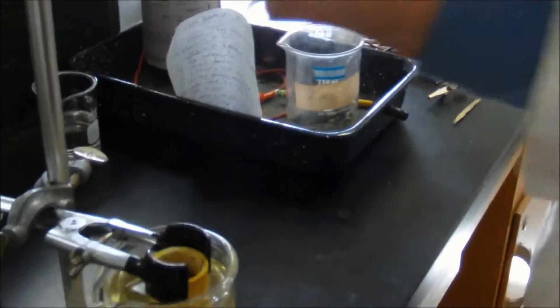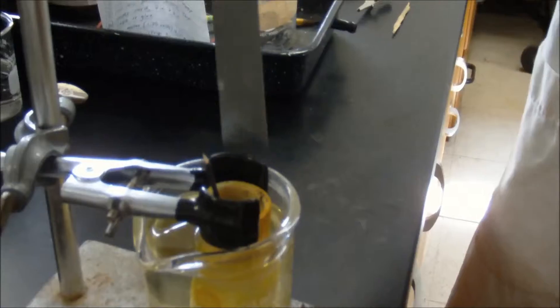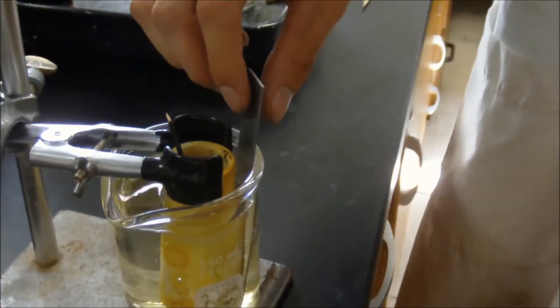As you can see, this is graphite from a pencil and this is a zinc strip. So what I'm going to do now is put the graphite into the porous cup and the zinc strip into the beaker. These two shall conduct electricity to make our fan over here turn.